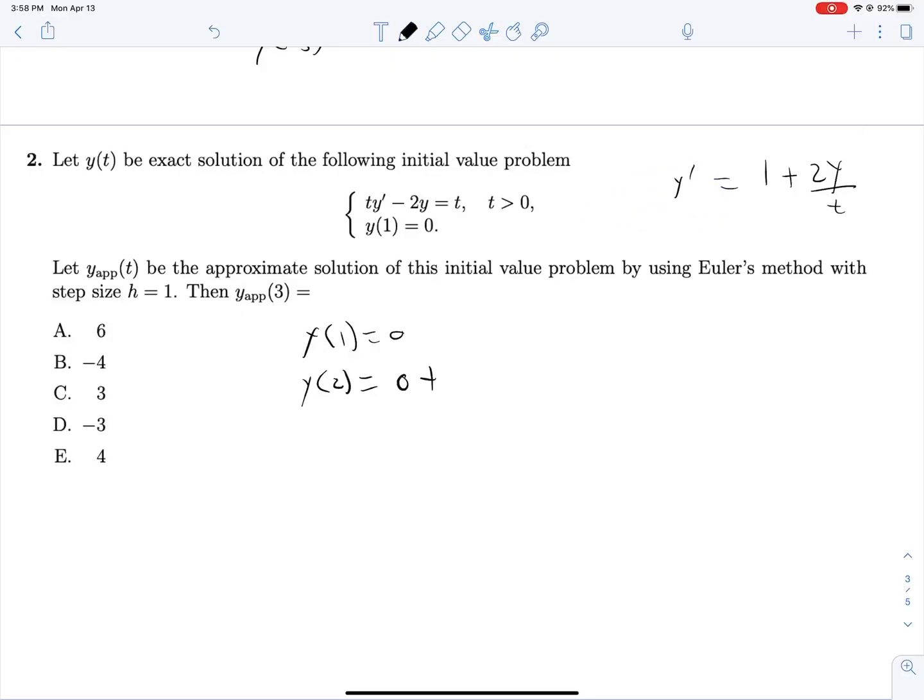There we go. Okay, so we are plugging in 1 for t and 0 for y into this, so 1 plus 0 over 1, so that's just 0, and y of 2 is 1.